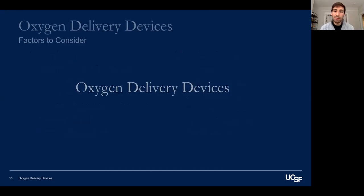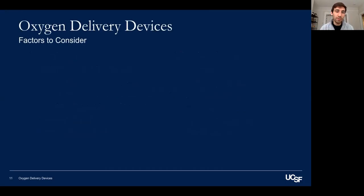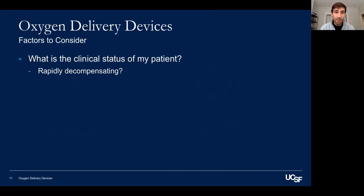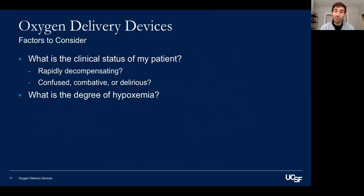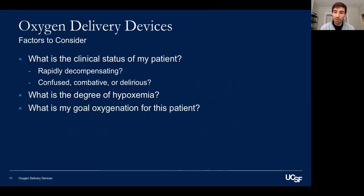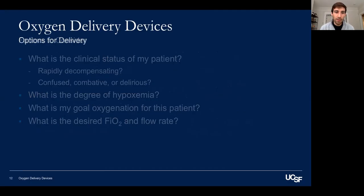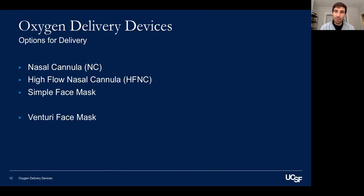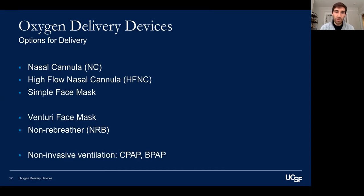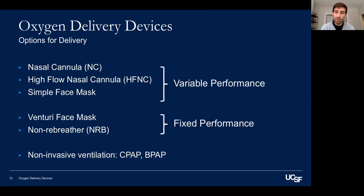Next, we'll discuss oxygen delivery devices. When approaching a patient with hypoxemia, things to consider include: What is the clinical status of my patient? Are they rapidly decompensating? Are they confused, combative, or delirious? What is the degree of hypoxemia, and what is my goal oxygenation — which often changes in chronic lung diseases? What is my desired FiO2 and flow rate? Respiratory therapists will be your best friends here. We'll break these down into variable performance and fixed performance devices, and then discuss CPAP and bilevel.